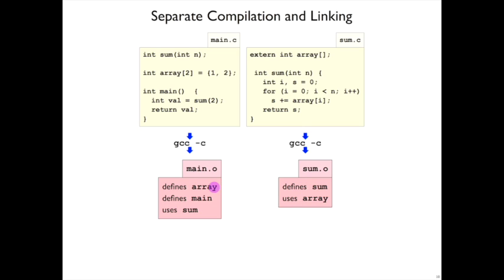These object files don't have information about the types of these names, and they don't exactly say whether they're functions or data. In general, it's just that they declare these symbols. And that's the general word for the name: symbols. Array, main, and sum are symbols that have to be matched up by the linker.